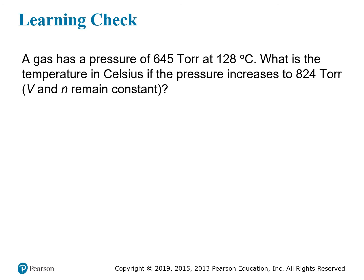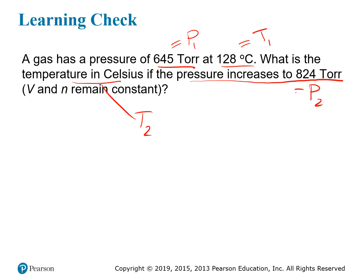Another example: a gas has a pressure of 645 torr at 128 degrees Celsius. Torr is a unit of pressure. We're asked to find the new temperature in Celsius if the pressure increases to 824 torr, with V and N remaining constant — so we use Gay-Lussac's Law.